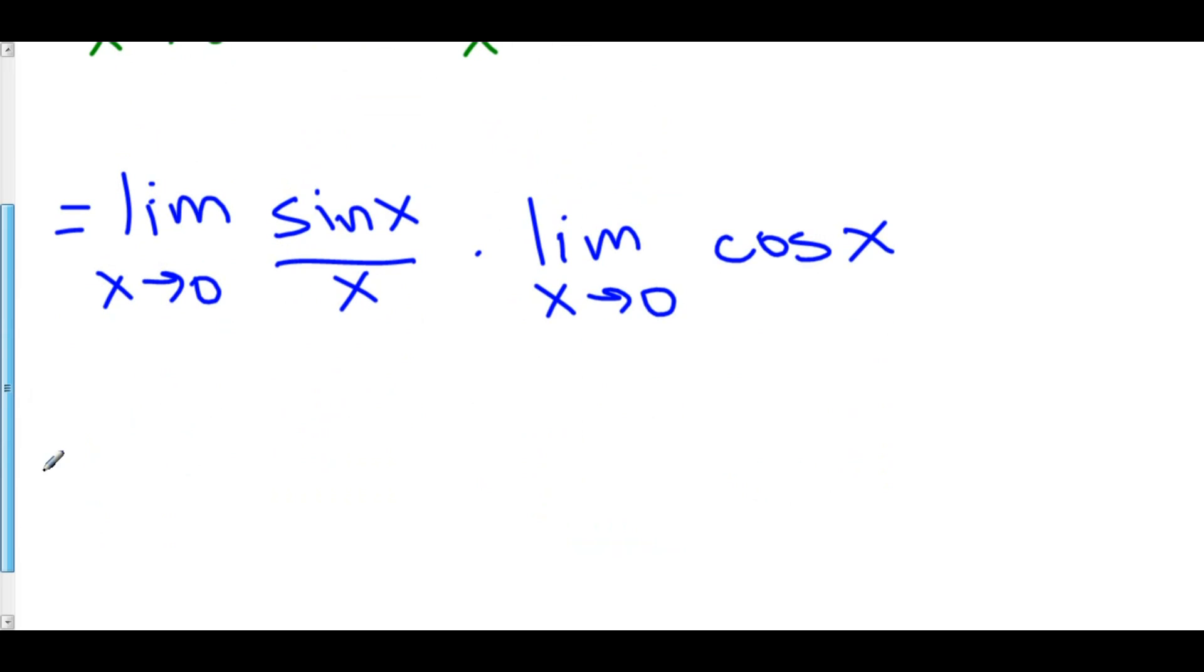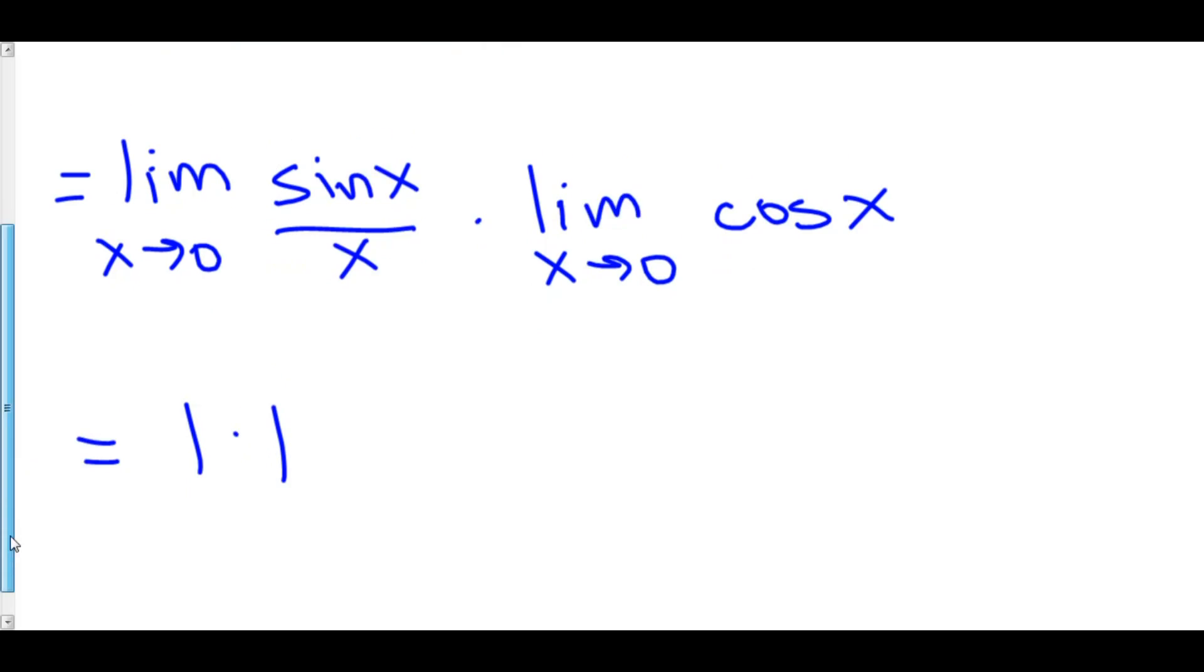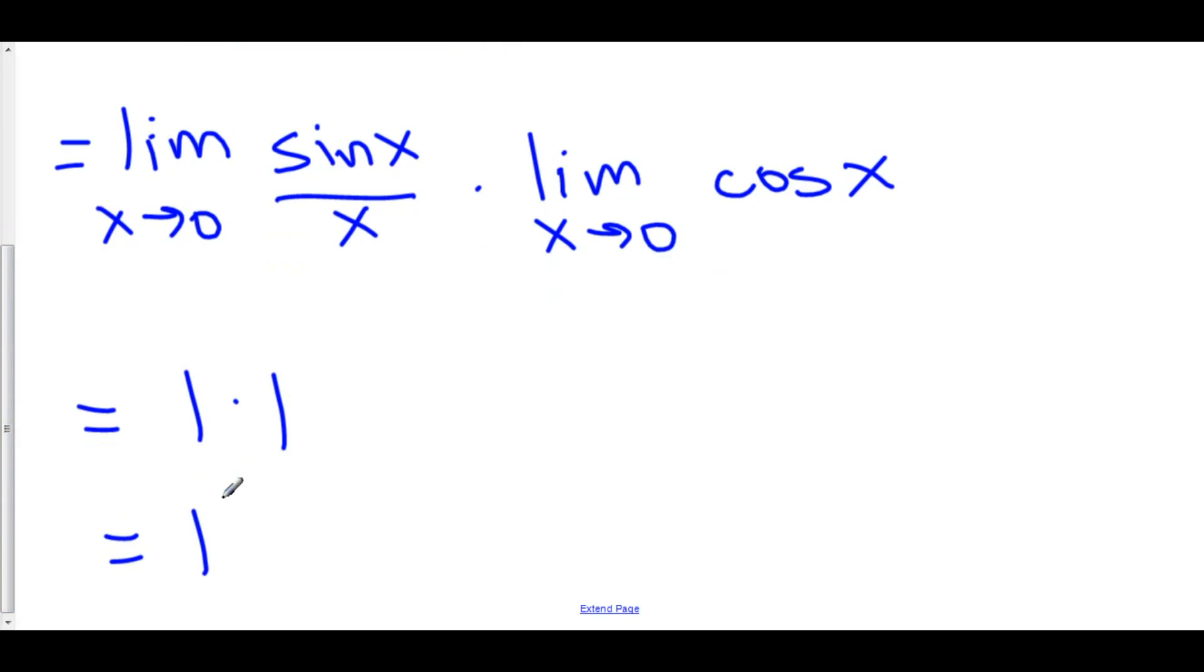Well, the limit as x approaches zero of sine of x over x, we know that that's one. The limit as x approaches zero of cosine of x. Let's plug it in. That's step one. Cosine of zero is one. One times one is one. And so, we can find limits by breaking them up, putting them together. And we can be very creative about how we break up our limits.